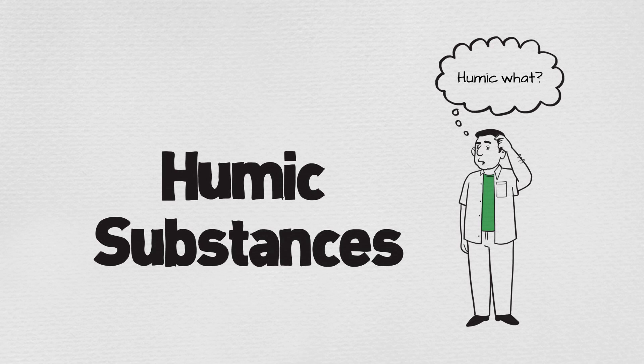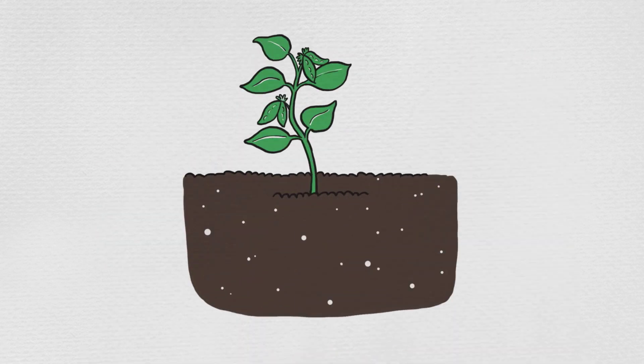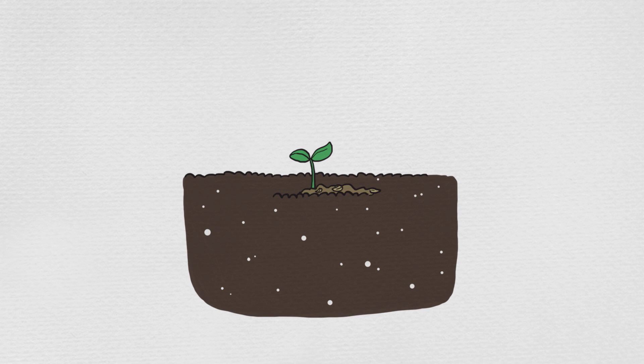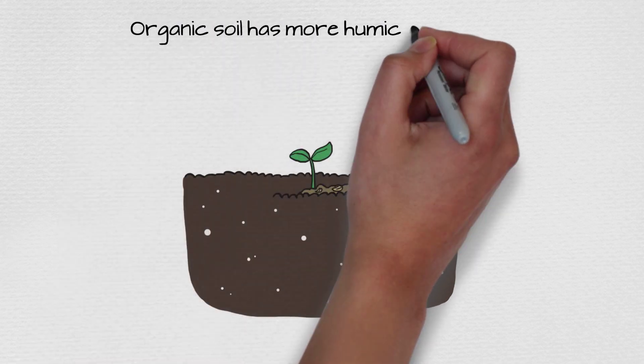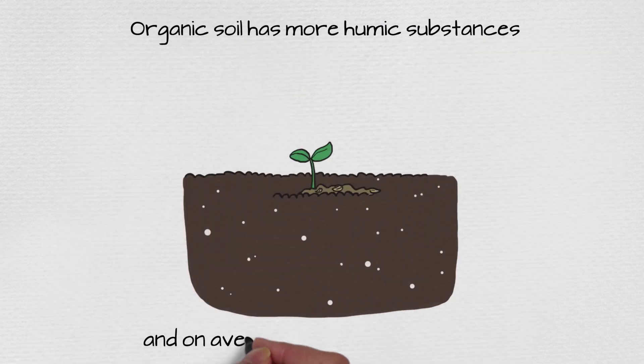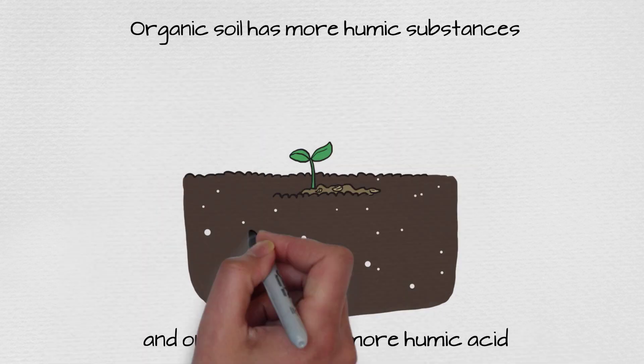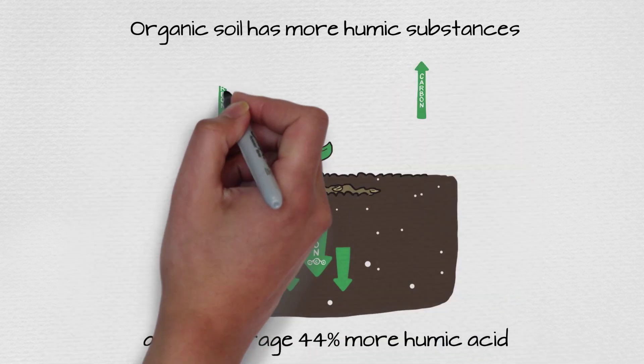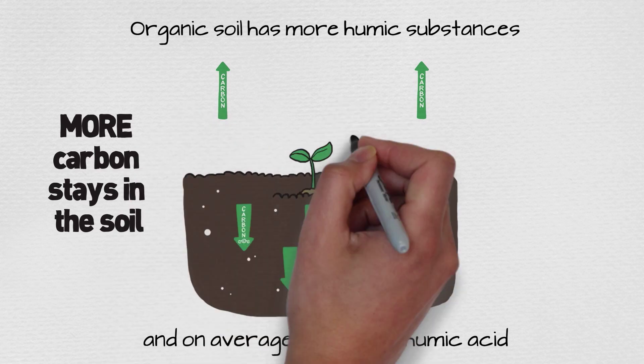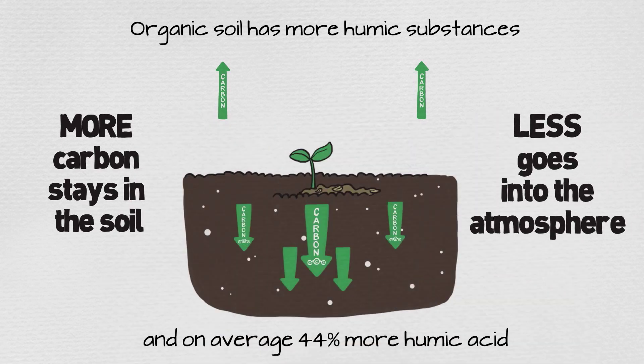Because humic substances are stored in the soil for a long time, they are key to long-term carbon storage in the soil. And because soils from organic farms have more humic substances, on average 44% more humic acid, that means more carbon stays in the soil and less goes into the atmosphere where it can contribute to climate change.